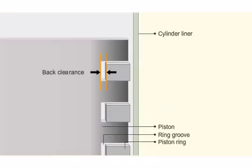Back clearance is the clearance from inner diameter of the piston ring to inside diameter of the groove. Thickness of the ring should be less than the groove depth so that the outer ring face is inside the ring groove.